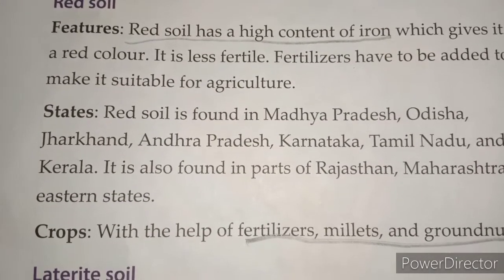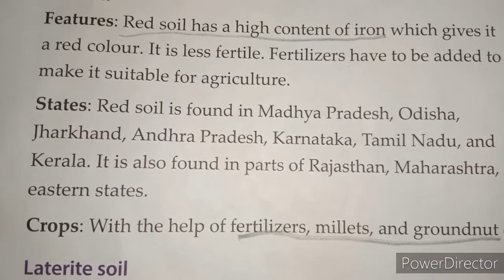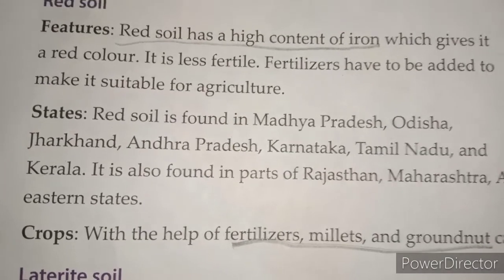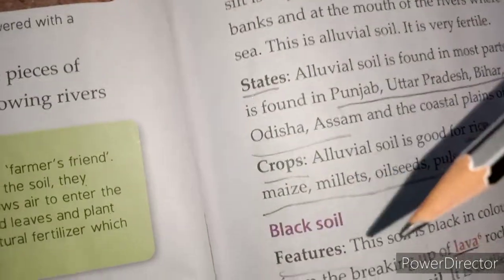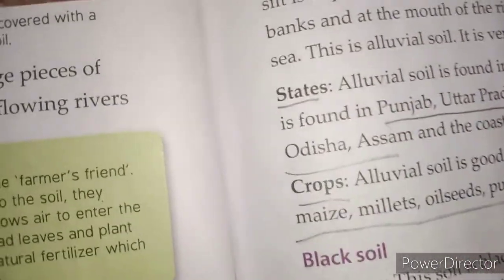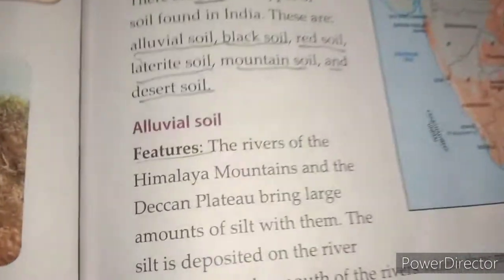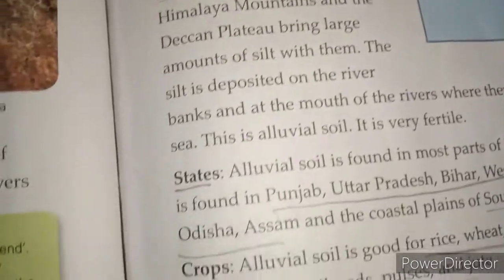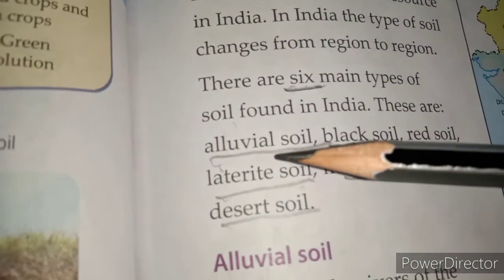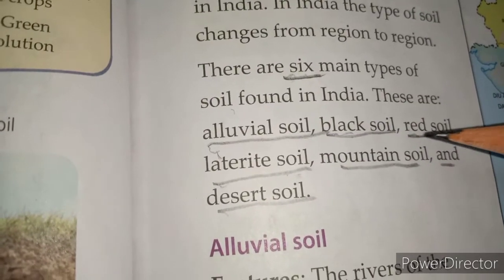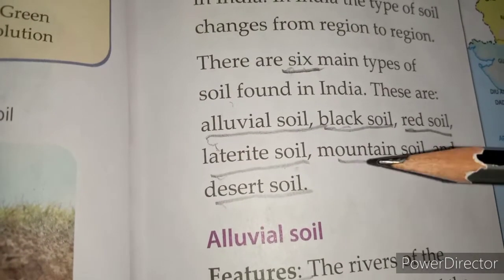I hope you will understand this topic. We have now covered alluvial soil, black soil, and red soil. There are 6 types of soil in total, and we have now covered 3 of them.